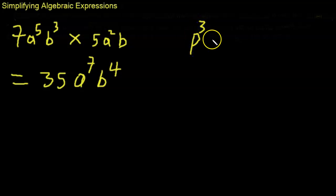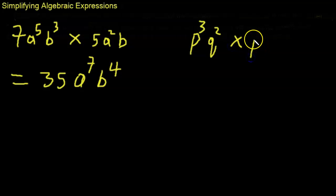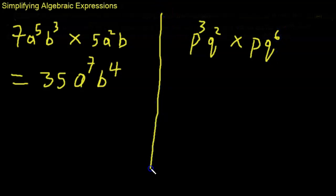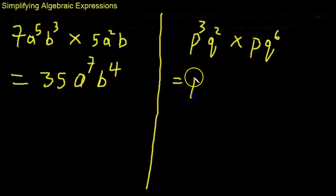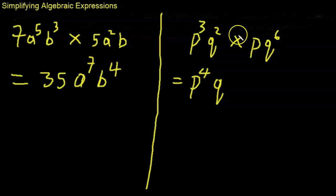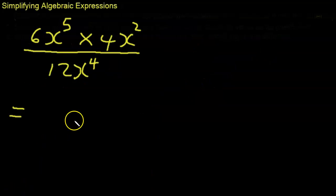Next one: p to the power of 3 times q squared times p times q to the 6. For the p terms, p to the power of 3 times p — that's p to the power of 1 — so we add the powers: 3 plus 1 gives 4. For the q terms, q squared times q to the power of 6, we add the powers to get q to the power of 8.